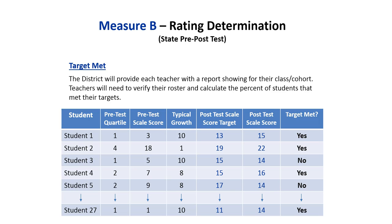Student 3, on the other hand, had a post-test score that was lower than the target score, resulting in a 'no' in the Target Met column. The reports are generated by the district and will include all students that tested on each teacher's report. In this case, there were 27 students in the class.